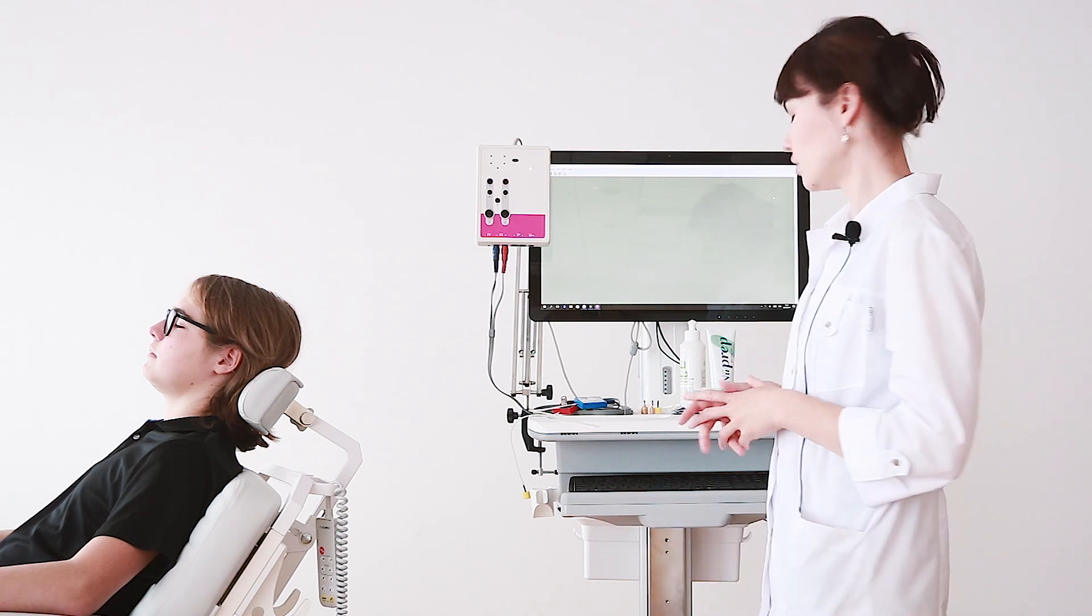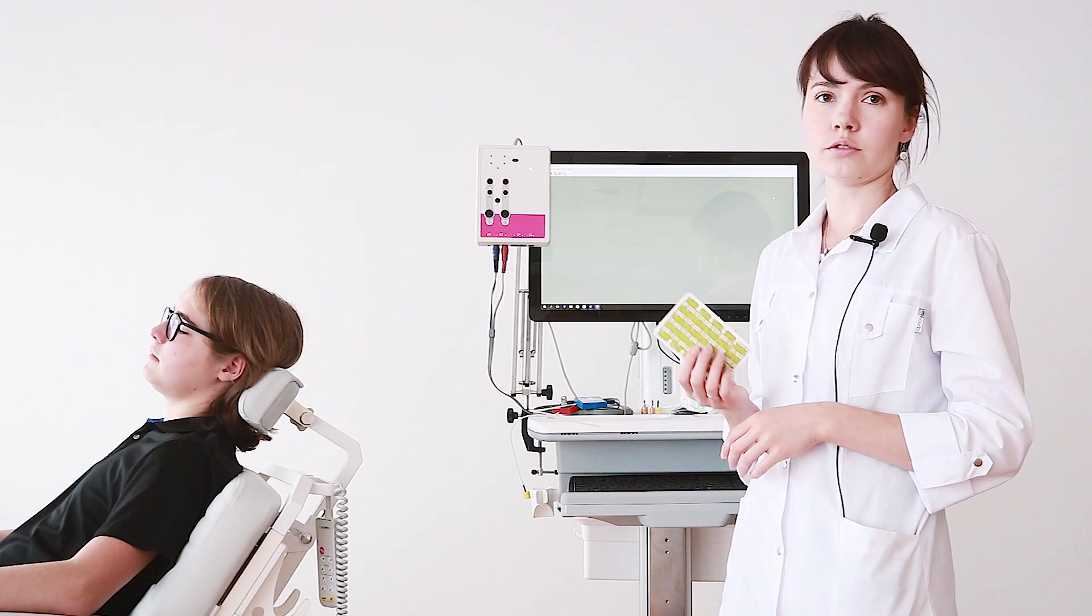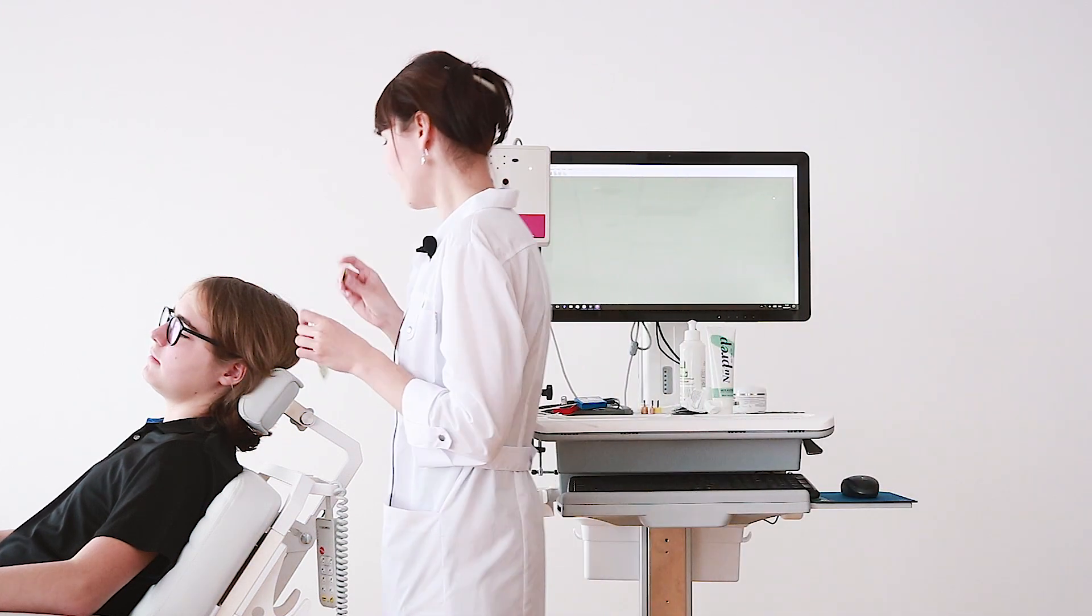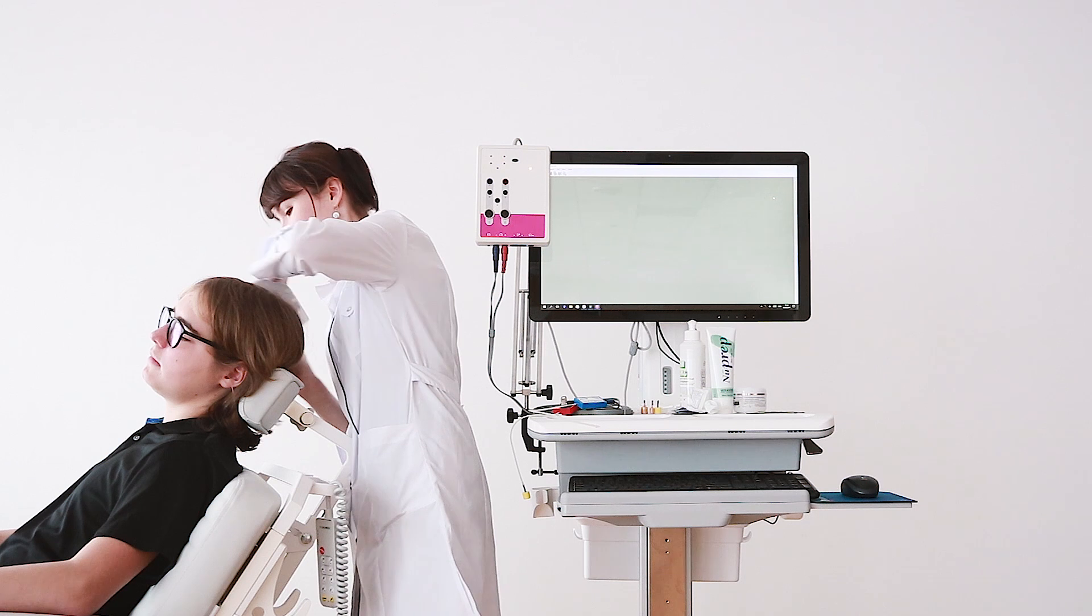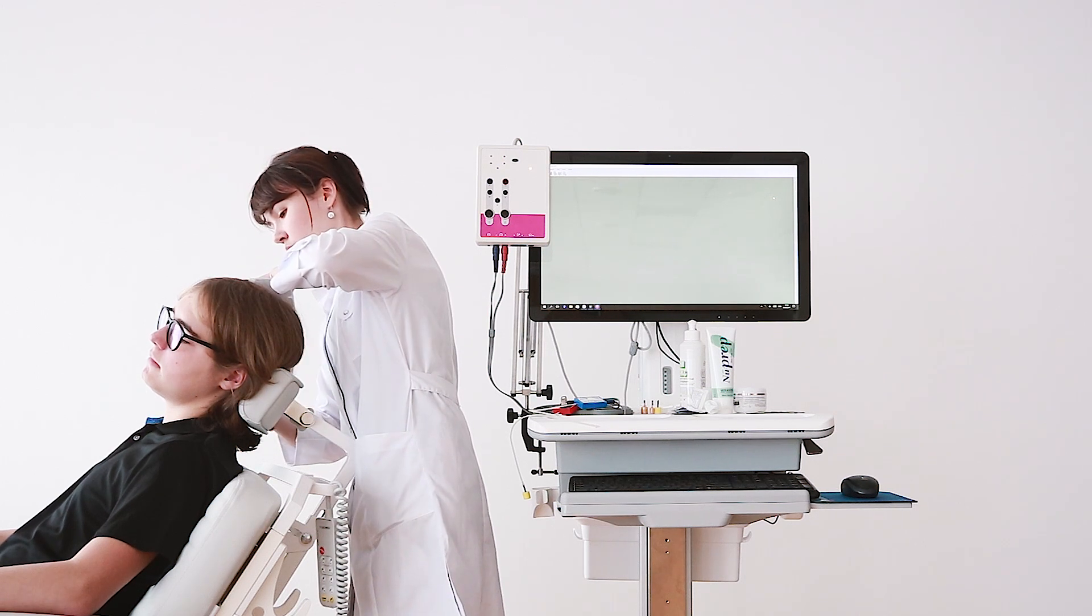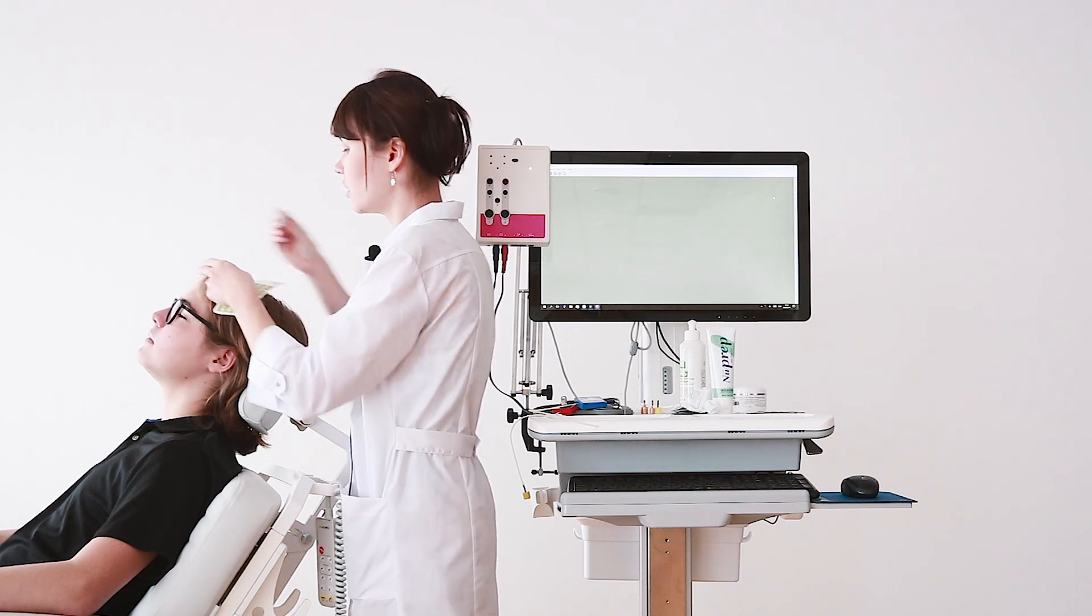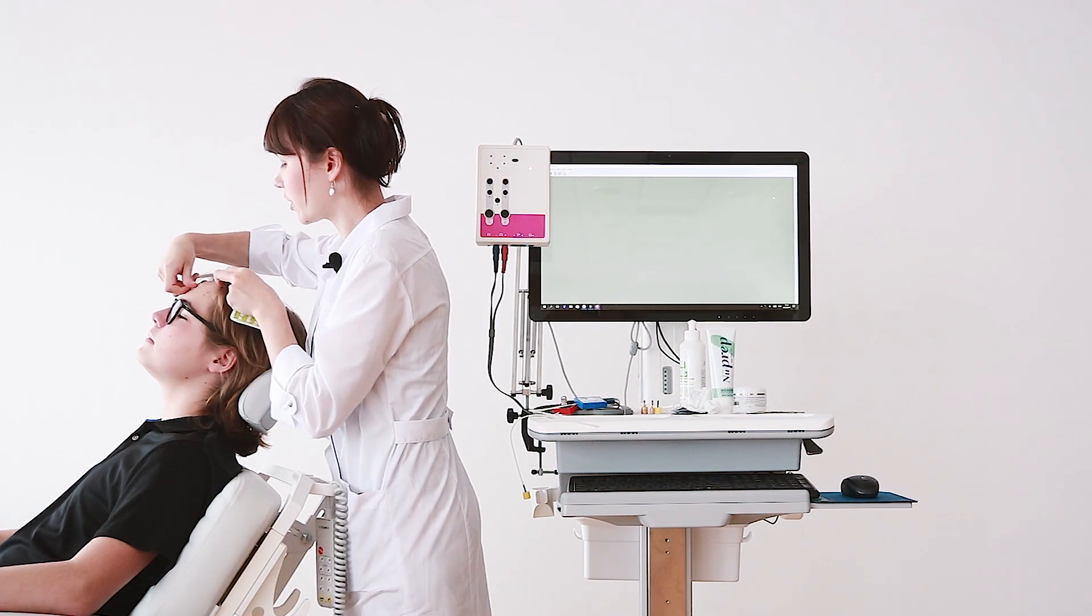Now we can position the reference and the ground electrodes. Today we will use single-use hydrogel electrodes. We put it on the skin behind the right mastoid. The reference and the ground on the forehead.